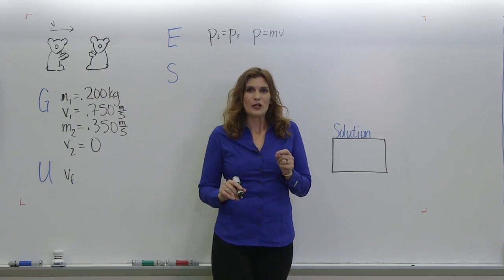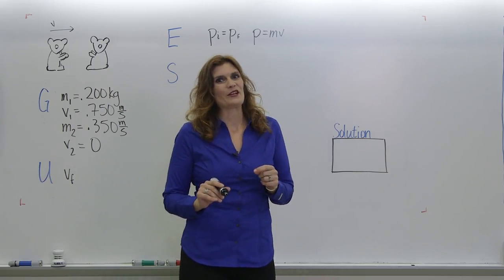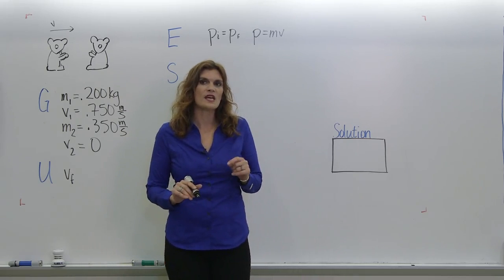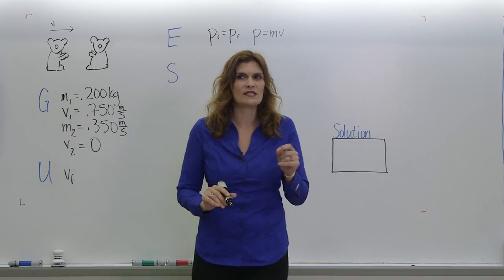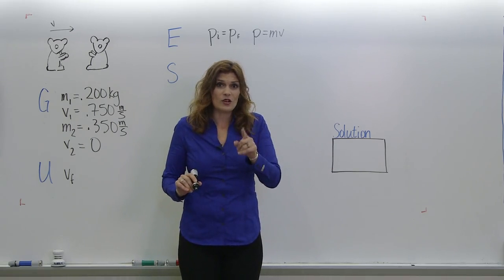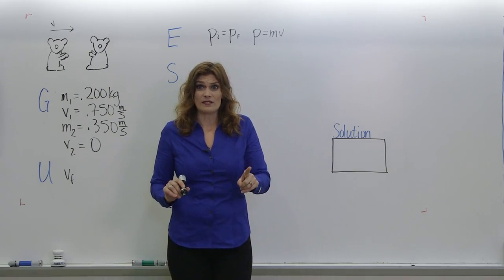So now we have clay models of koala bears sliding around on the ice. The first one has a mass of 0.2 kilograms and it slides on the ice with a speed of 0.75 meters per second. It slams into another clay model, but the second clay model is at rest.